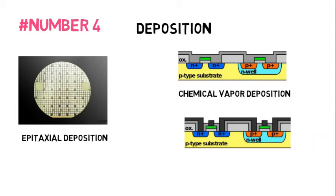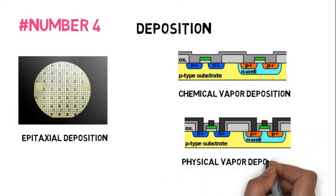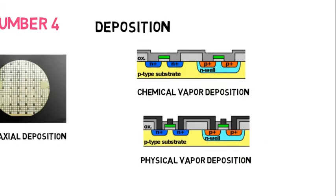Chemical vapor deposition is added on wafer surface. Physical vapor deposition is used to prepare metal material films on wafer surface.